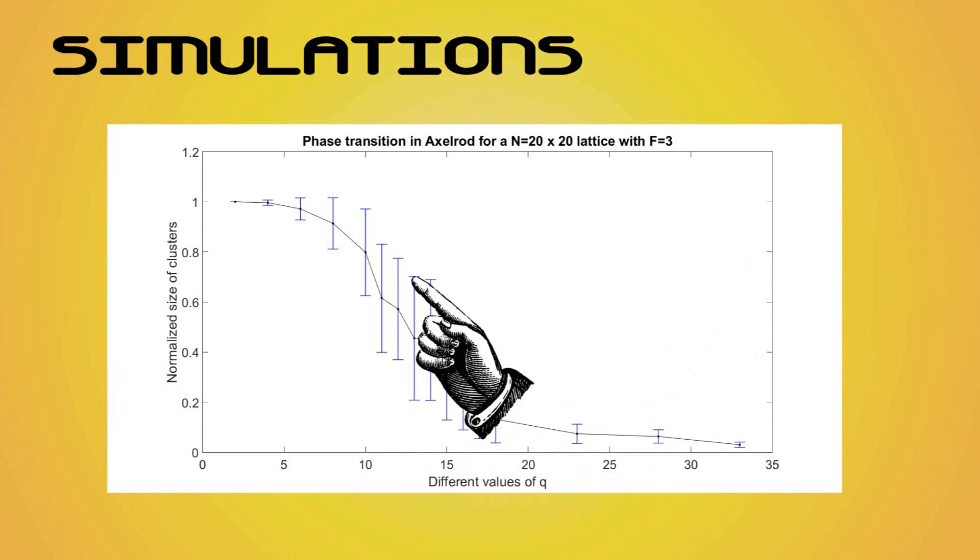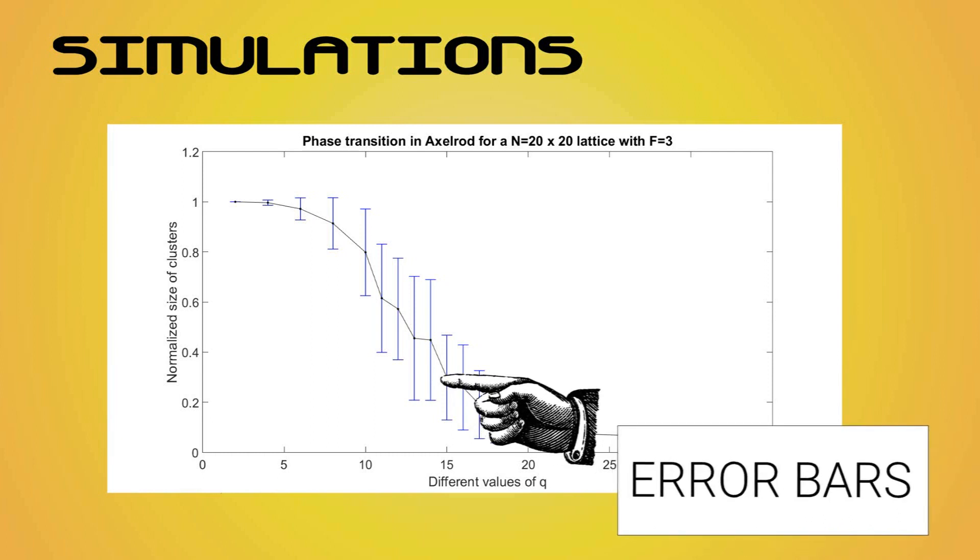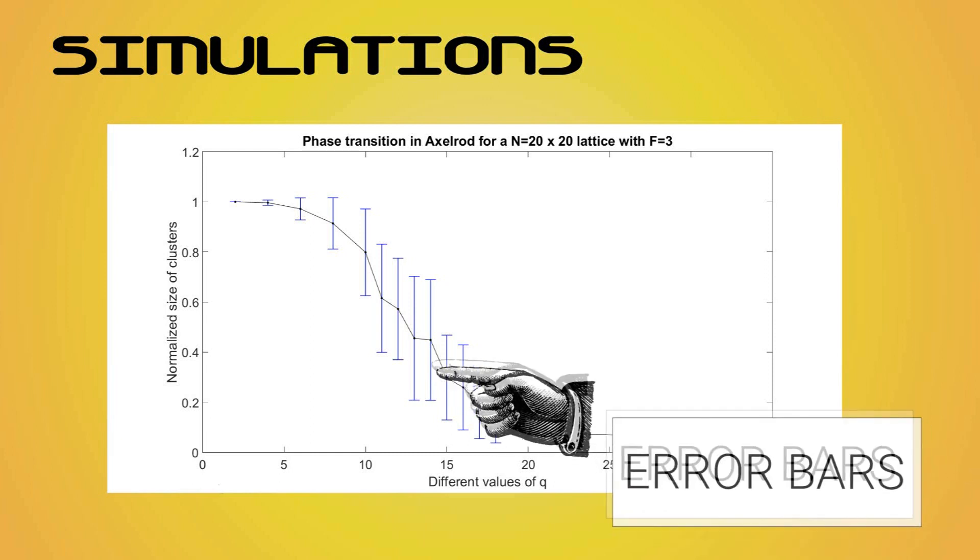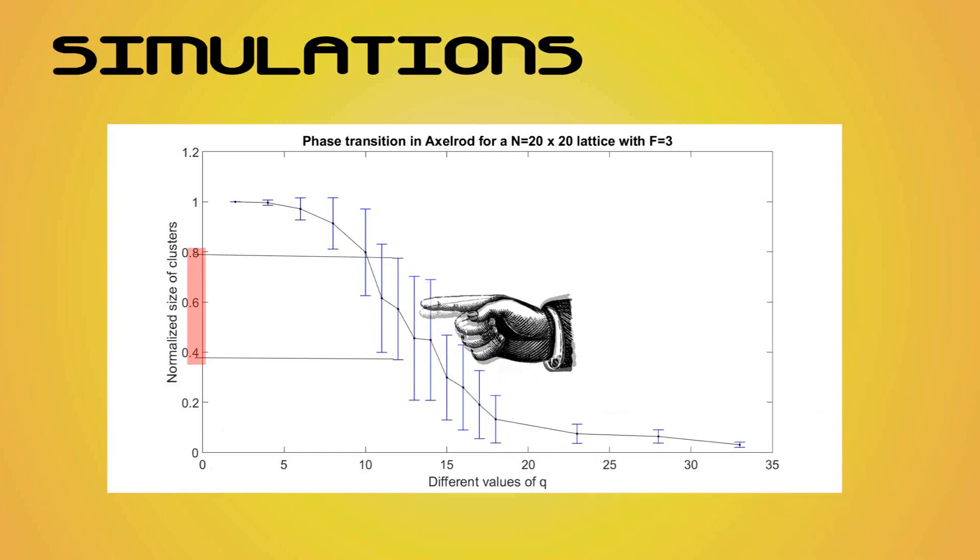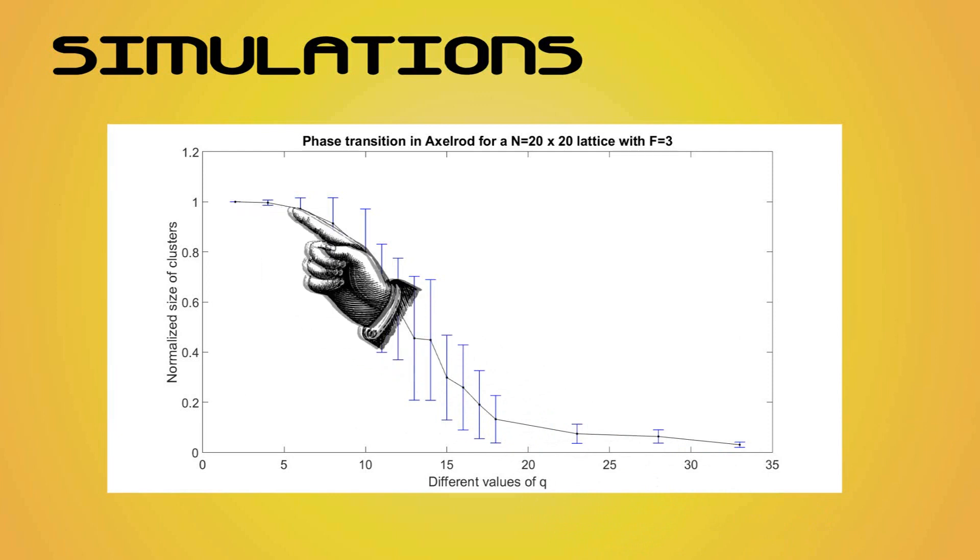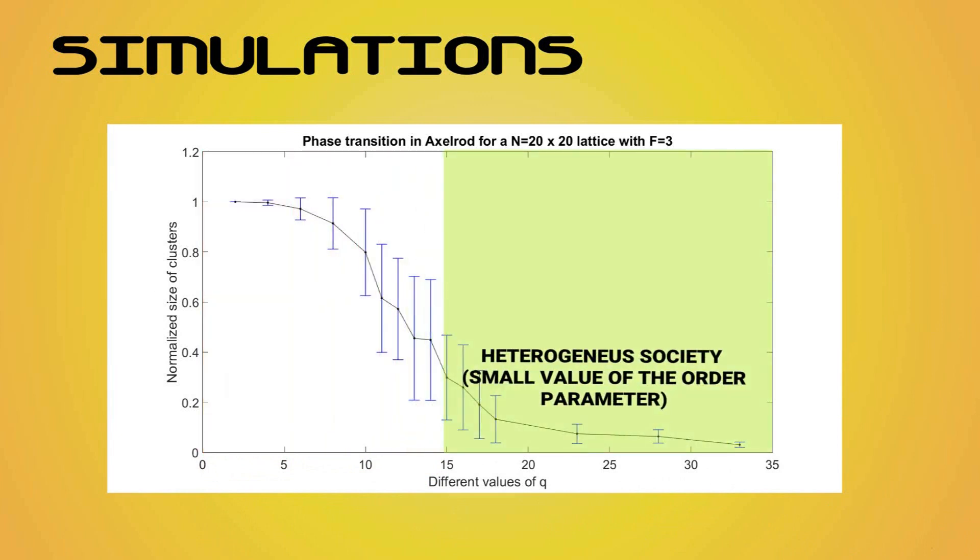These lines over each point are called error bars. Remember when we said that the results of the simulations are purely random? This means that the size of the biggest cluster is a parameter that will vary from realization to realization. In order to have results that are statistically meaningful, we took the results from several realizations and averaged them. These error bars indicate how much the different realizations deviate from the average value. For example, for Q equals 12, we see that the cluster size is between 0.4 and 0.8 most of the times, with different values for each realization. In this case, we can see a continuous variation of the order parameter from big values, which indicates a homogeneous society occurring for small Q, to small values, which indicate a heterogeneous society occurring for large Q.